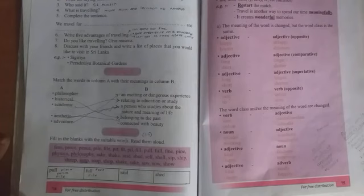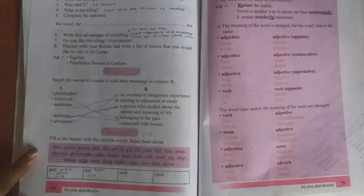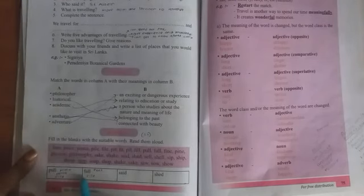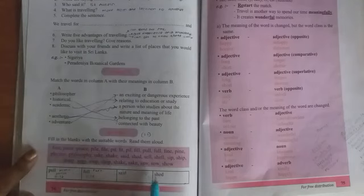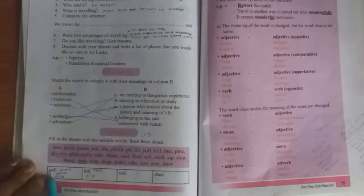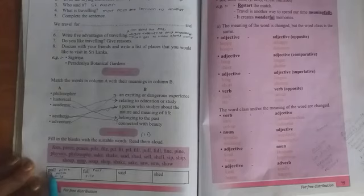We're learning about four sounds. The first word is 'pull', the second is 'full', third is 'said', and fourth is 'shed'. Now you have to go through all these words and read them aloud.